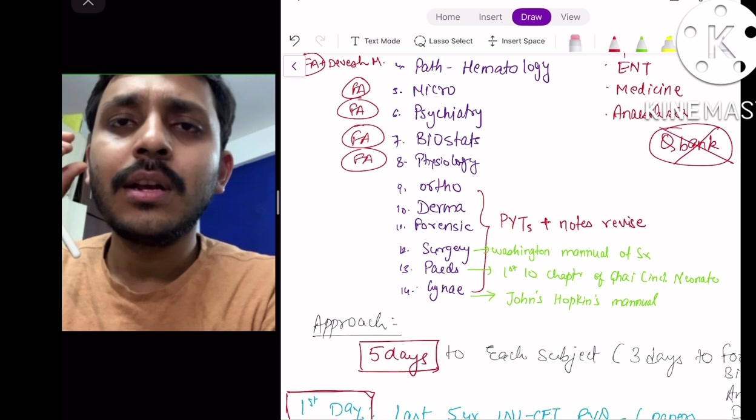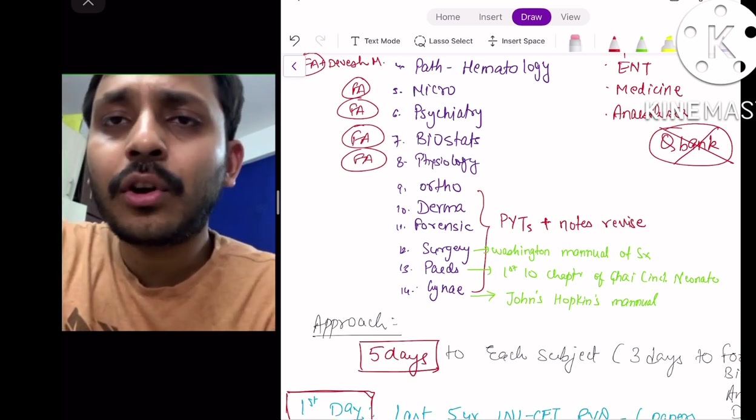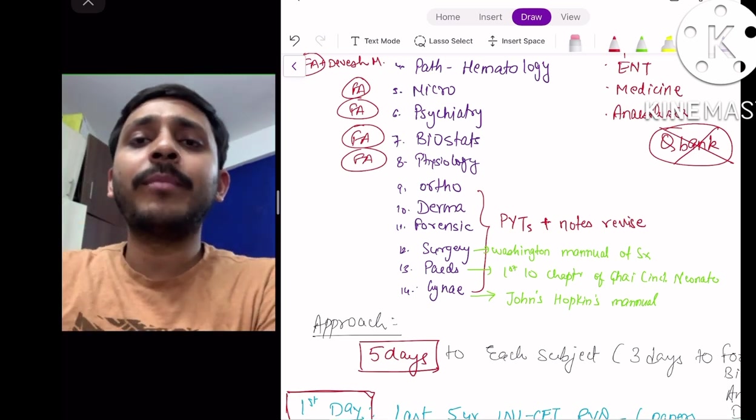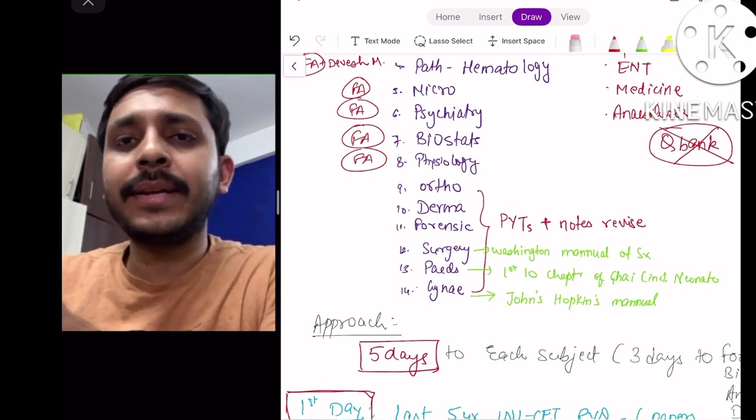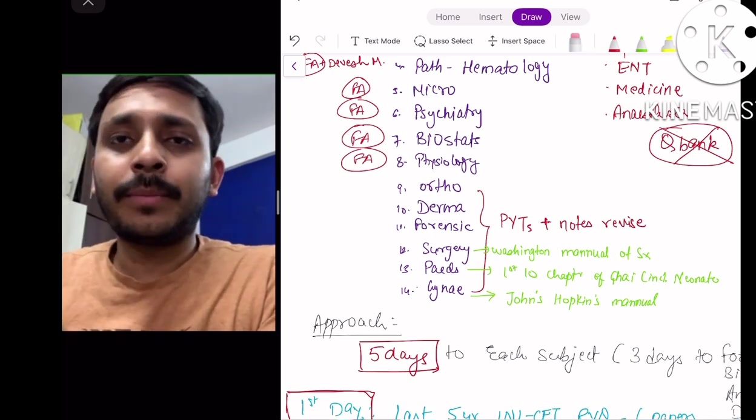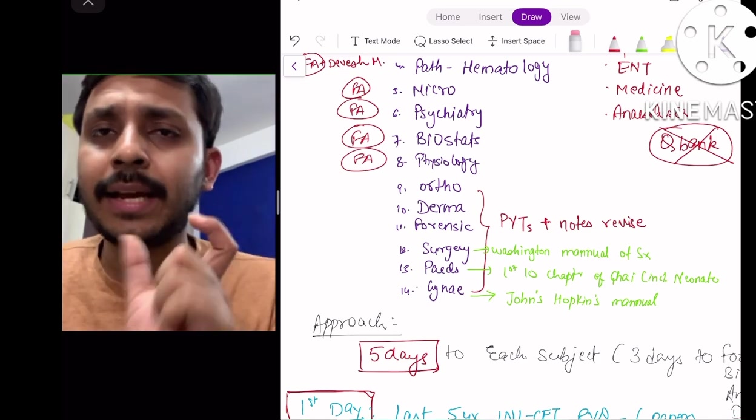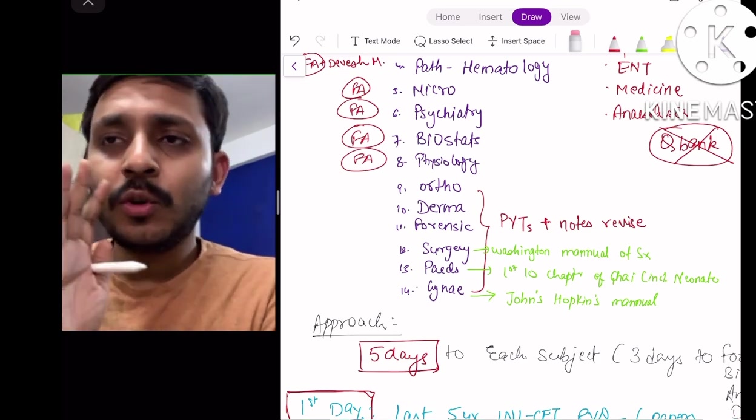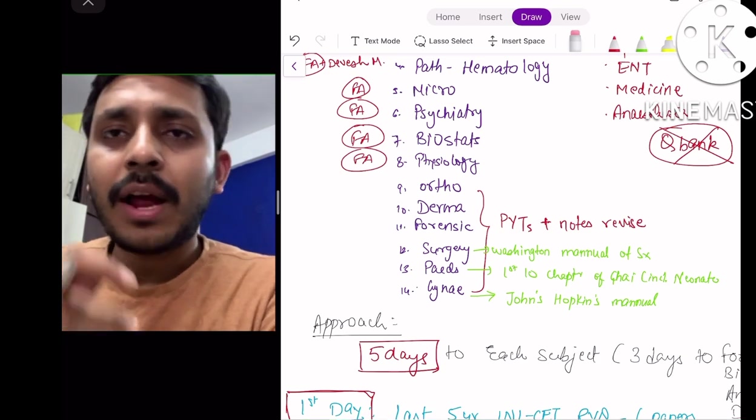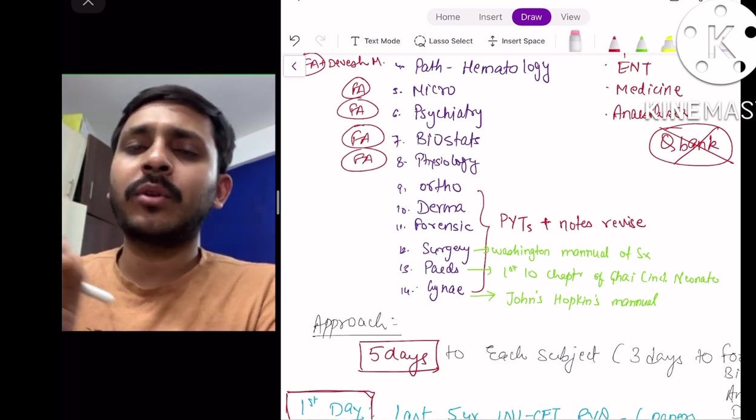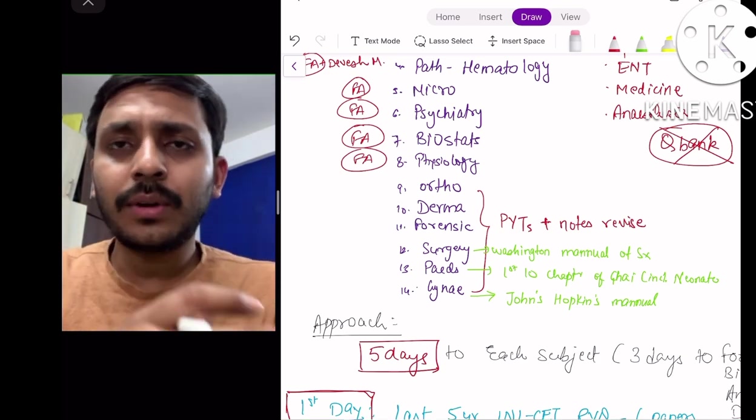For ortho, what I did - I had Apoorva Mehra's Orthopedic Dhamaka, so in his review book, in the last 15-20 pages he has summarized his whole orthopedic review. That is also very high yielding. Derma, just read previous questions and Neena Khanna's images. Forensic, you have to have your own notes. I think DAMS provides very good notes if you can get them.